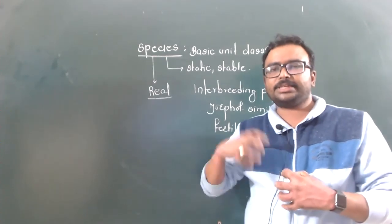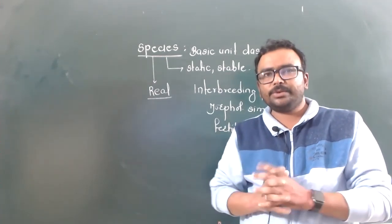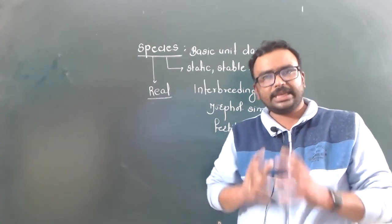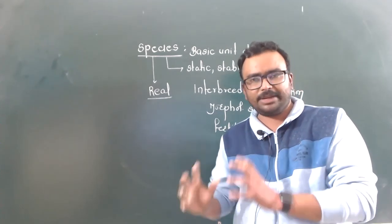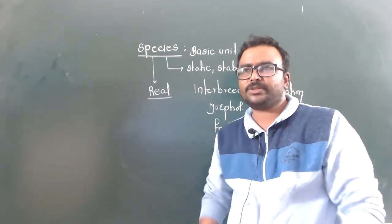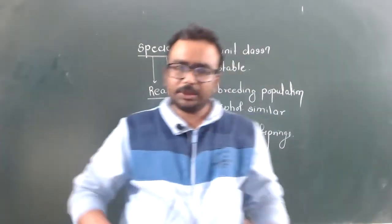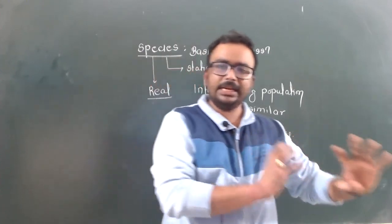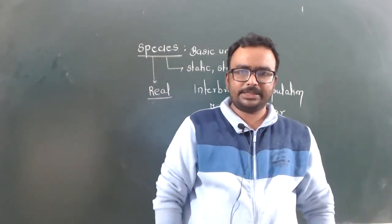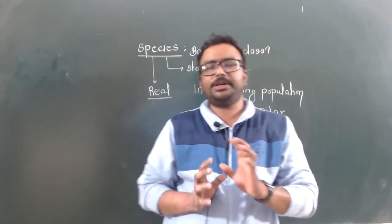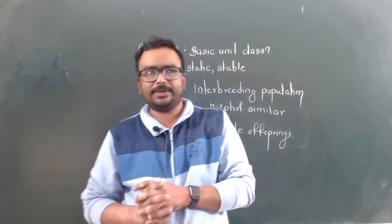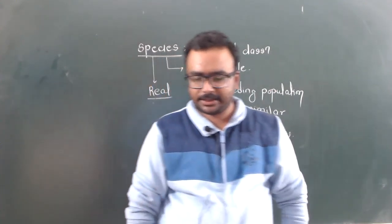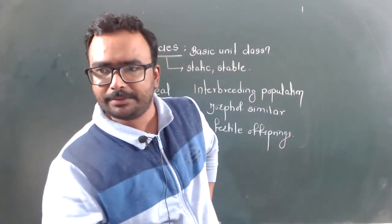Species is the basic unit of classification. Within species there are similarities; from species we move to genus, then family, then order, then class, and finally kingdom. We can revise these examples to consolidate our understanding of taxonomic categories.